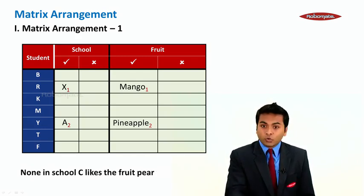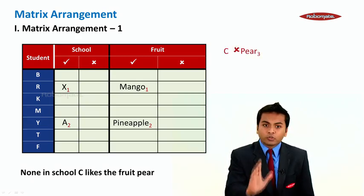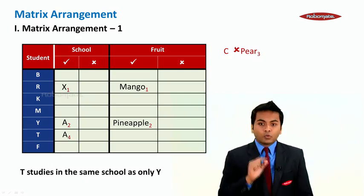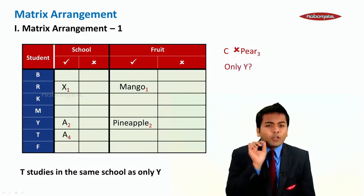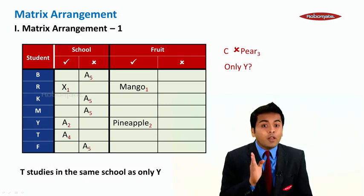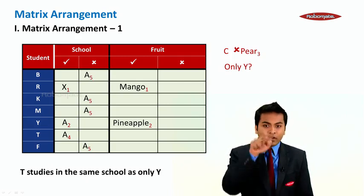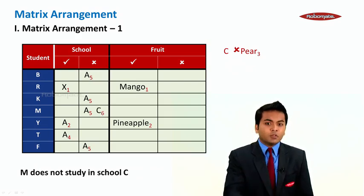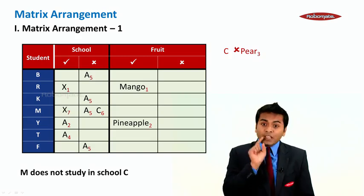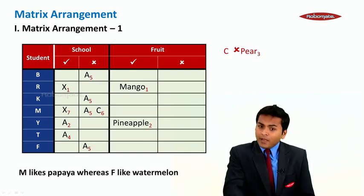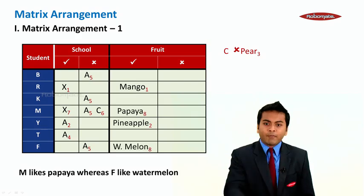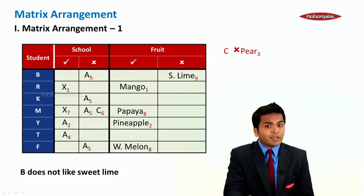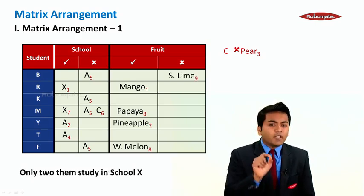T studies in the same school as only Y, meaning T studies in school A. 'Only Y' means apart from Y and T, no one else studies in school A, so we write A in the cross column for all remaining students. M does not study in school C, so we put a cross for C against M. Since M doesn't study in A or C, M must study in school X. M likes papaya and F likes watermelon, so we record those. B does not like sweet lime, so we add sweet lime to B's cross column.